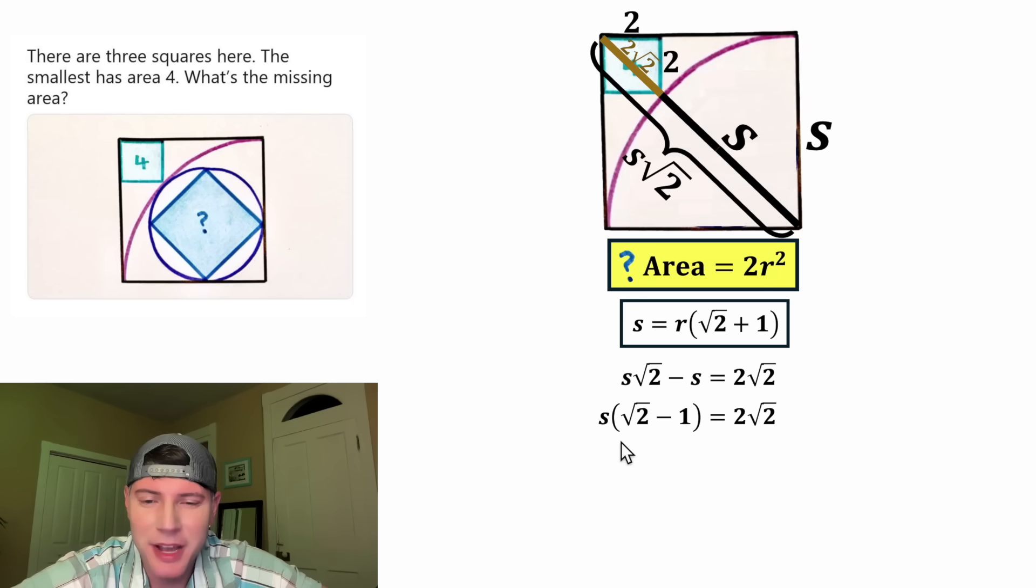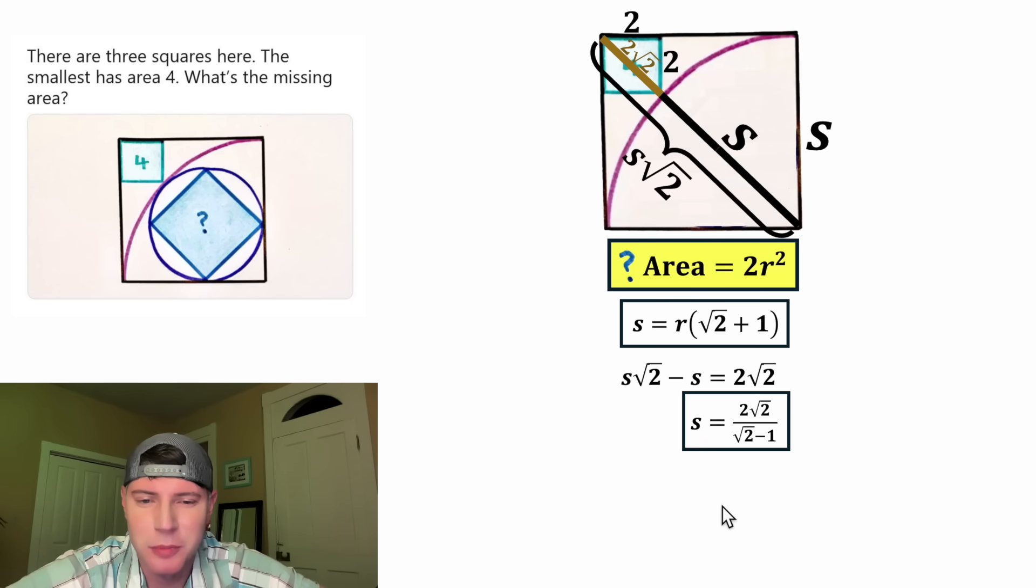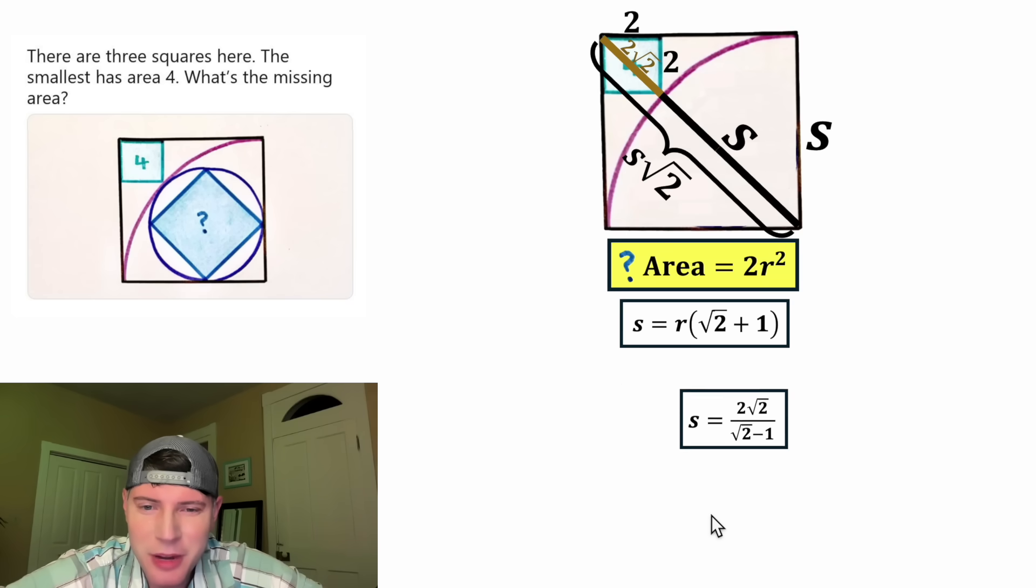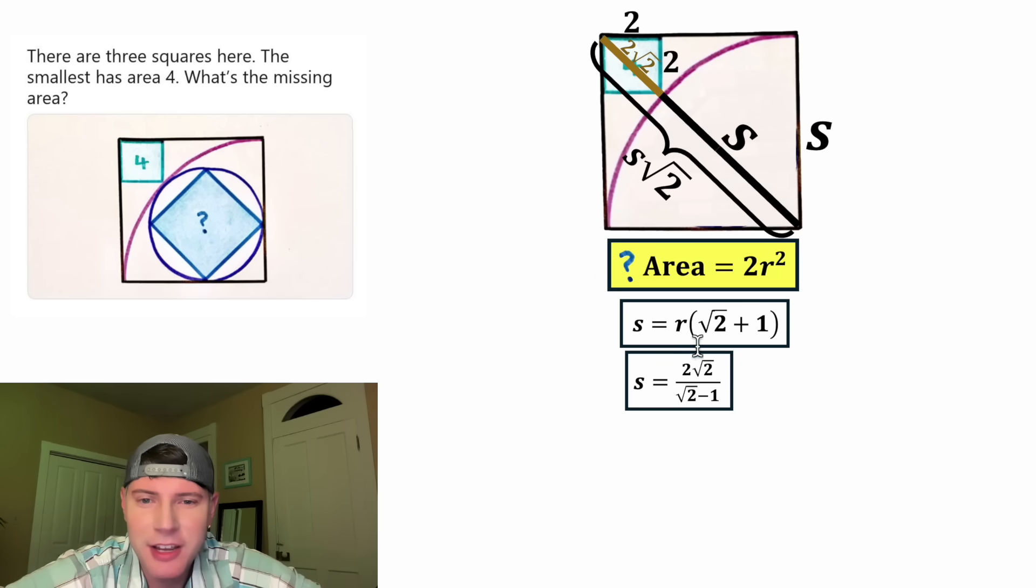Next, to get this s all by itself, let's divide both sides by root two minus one. On the left-hand side, since these binomials match, they're going to cancel each other out. And we have now solved for s. s is equal to two root two over root two minus one. This looks important. Let's put a box around it. And now I think we have everything we need. We know what s is so we can figure out r. And then once we figure out r, we can figure out the area of the question mark. And that's the answer to our question.